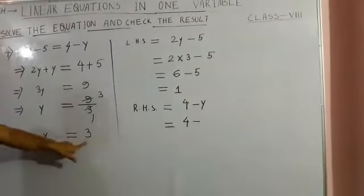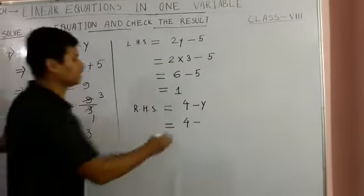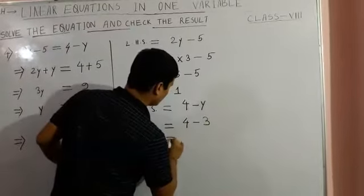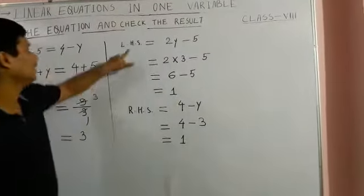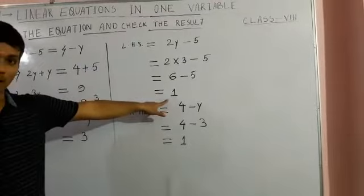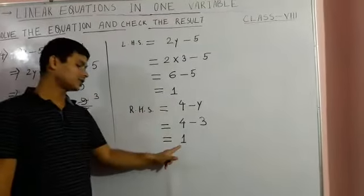y is 3. We can place it here: 4 minus 3, this is 1. Wow! In left hand side we got 1, in right hand side we got 1.